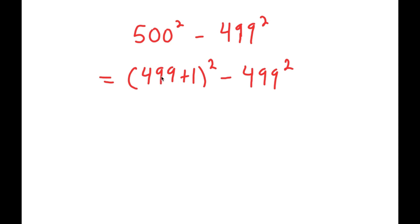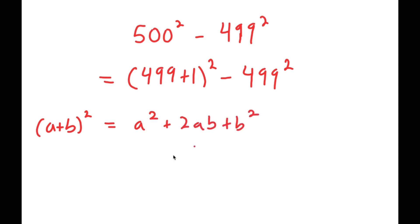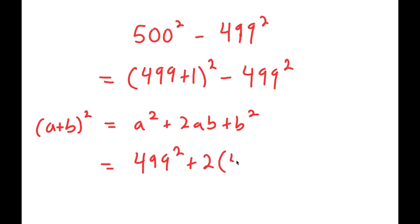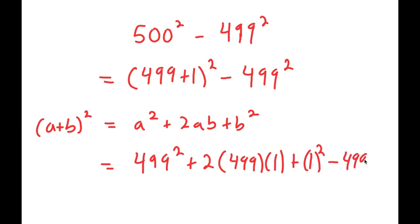If I have something in the form a plus b squared, this is equal to a squared plus 2ab plus b squared. So 499 plus 1 squared turns into 499 squared plus 2 times 499 times 1 plus 1 squared, and I have this minus 499 squared.